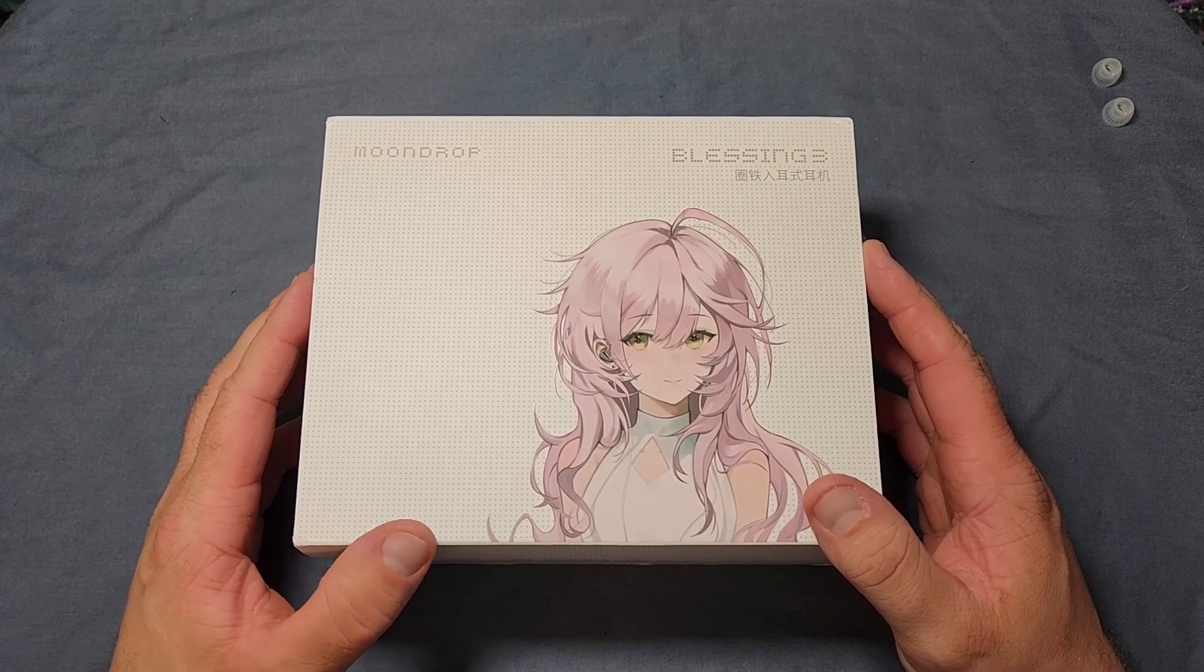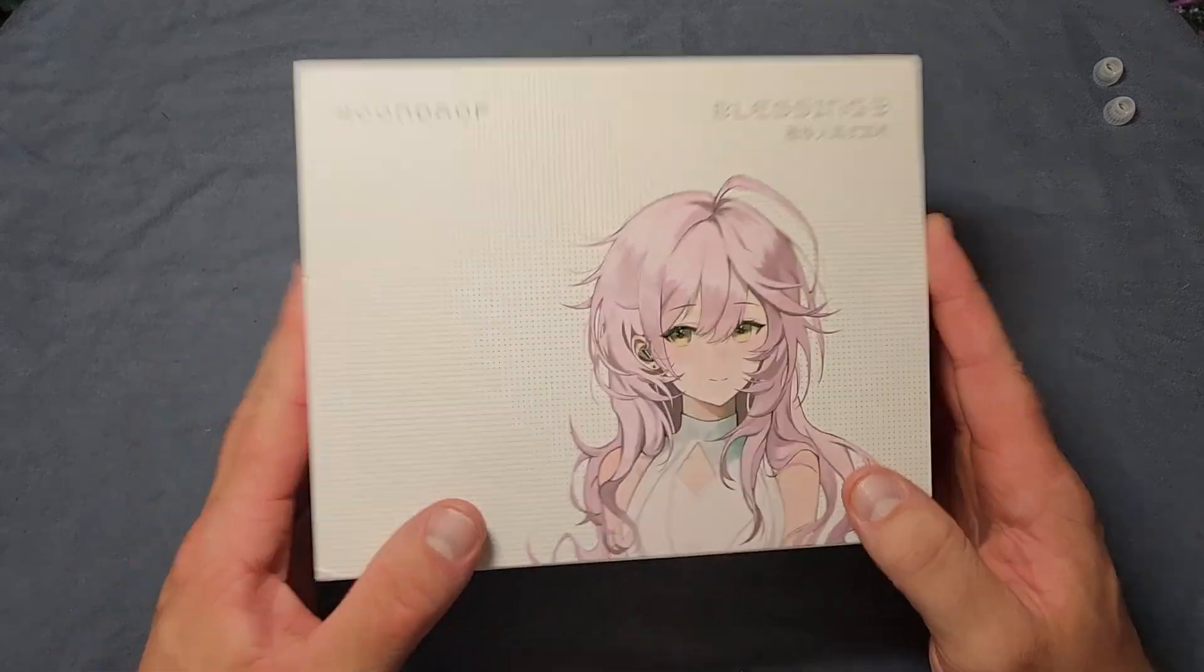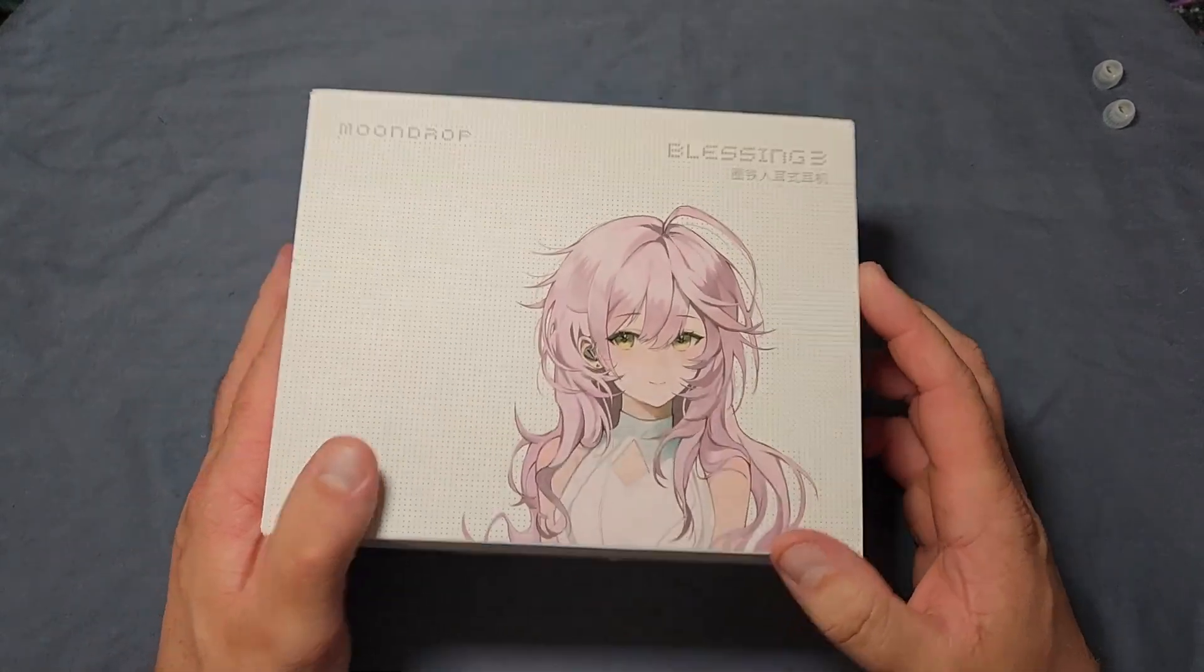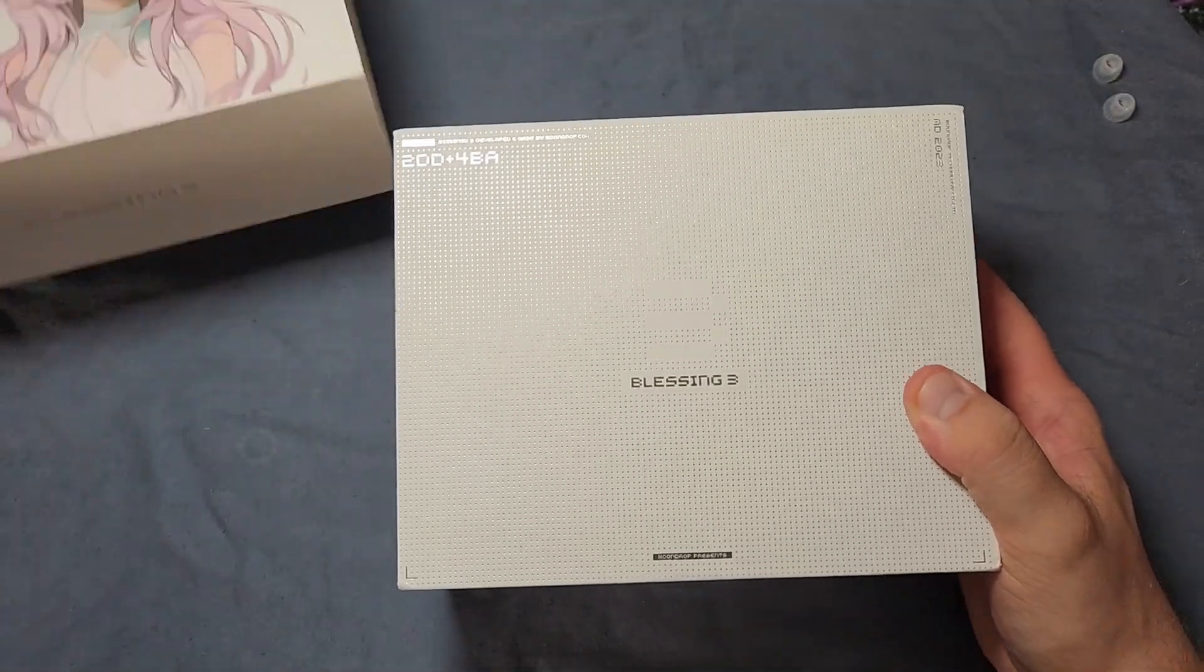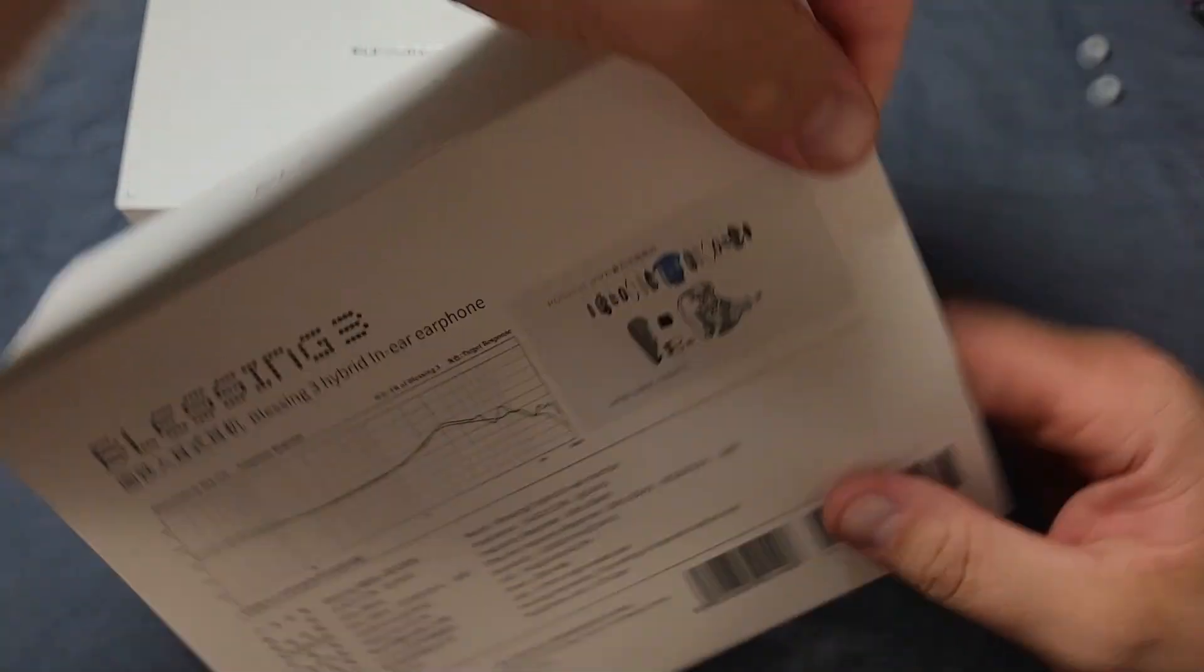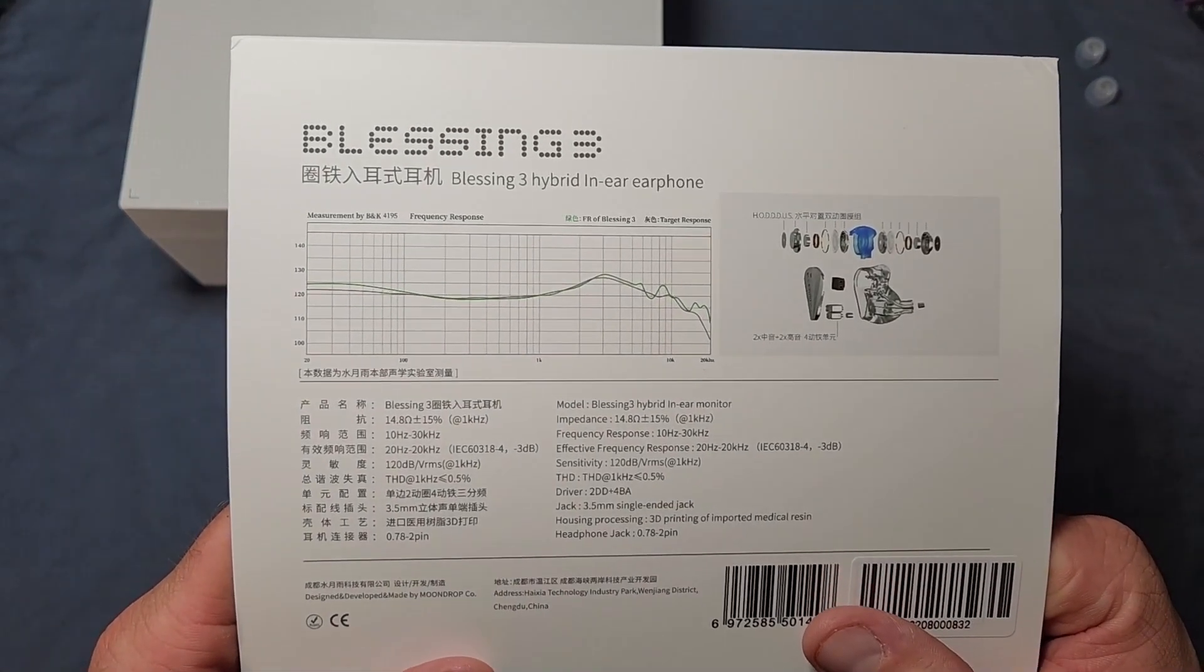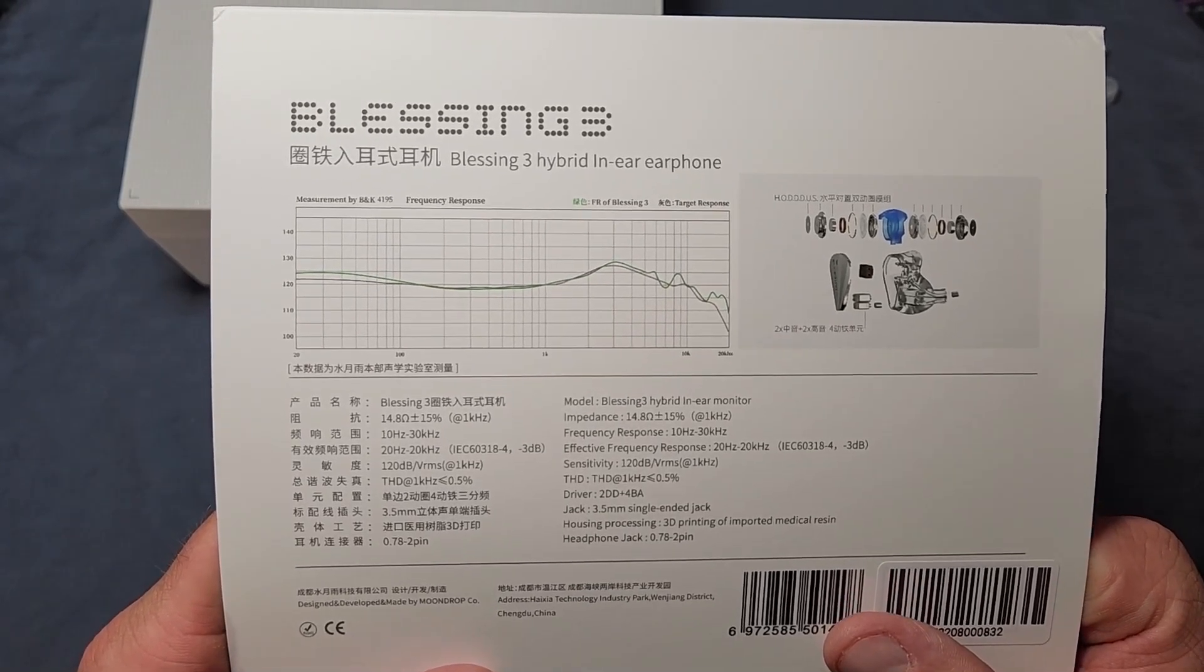Moondrop Blessing 3 packaging. Okay, got the Moondrop standard waifu girl on there. Never really understood that trend. A little weird and creepy in my opinion, but whatever. That is a cardboard slip sleeve. Pops off there. Actually, let's look at the back of that for a moment because there are some good specs and all of that on here.